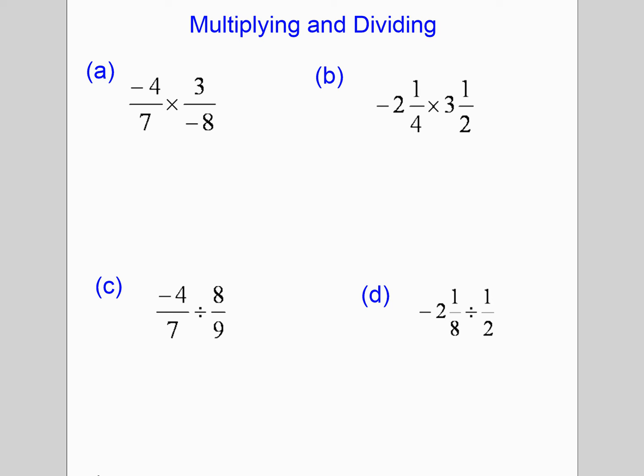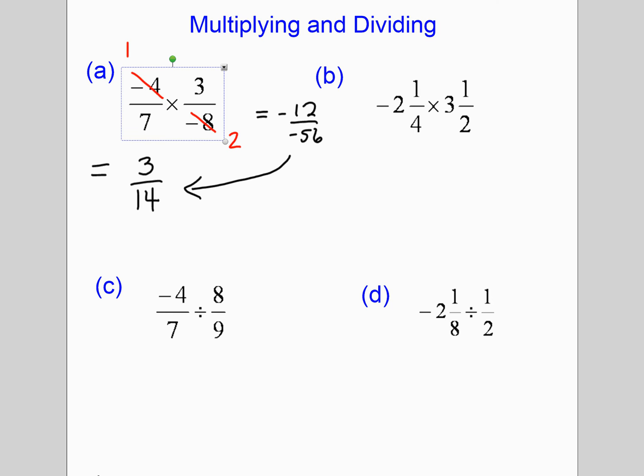When multiplying, remember you just multiply the tops and multiply the bottoms, or you can cancel if there are things to cancel. Remember that a negative times a negative equals a positive. Here, 4 goes into 4 once and 4 goes into 8 twice, then negative 1 times 3 and 7 times negative 2 gives a positive answer: 3 over 14. If you got negative 3 over negative 14, simplify it to positive 3 over 14. If you prefer not to cancel, multiply tops and bottoms to get negative 12 over negative 56, which still simplifies to positive 3 over 14.